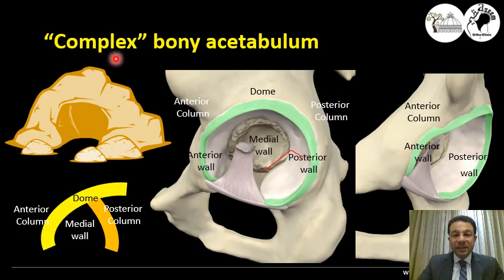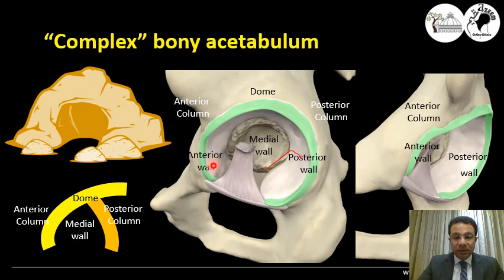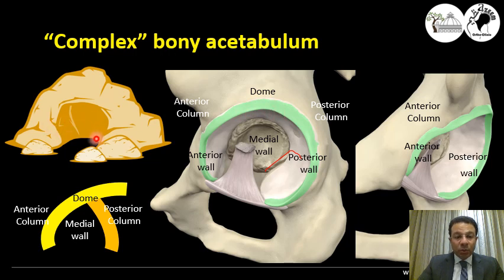So, complex bony acetabulum is no more complex. For simplification, think of it as a cave. The anterior wall protrudes over an anterior column, and the posterior wall protrudes over a posterior column. These two columns and walls are connected by the dome. The medial part, or the floor of the cave, is the medial wall of the acetabulum. So the acetabulum is formed exactly like a cave with anterior, superior, and posterior parts.